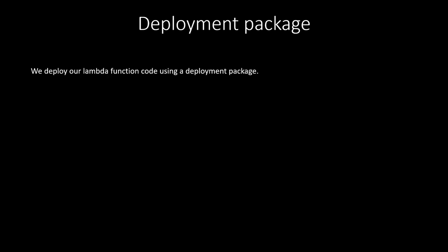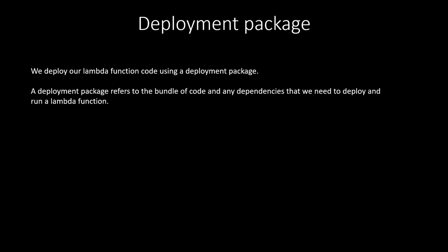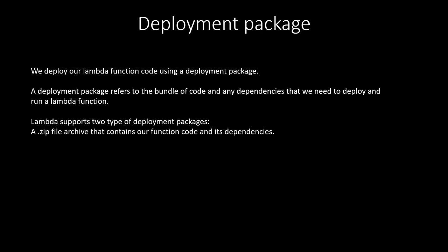Now, what is a deployment package? We deploy our Lambda function code using a deployment package — a bundle of code and any dependencies needed to deploy and run a Lambda function. Lambda supports two types: first, a ZIP file archive that contains our function code and its dependencies; and second, a container image. A container image includes the base operating system, the runtime, Lambda extensions, your application code and its dependencies, and you can also add static data into the image.